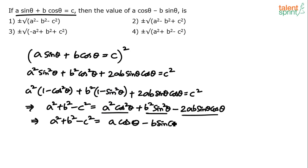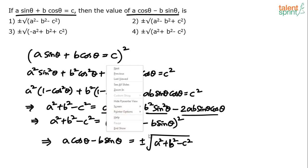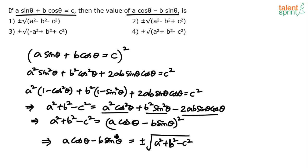So we can conclude: a²+ b² - c² = (a·cosθ - b·sinθ)². Taking square root on both sides: a·cosθ - b·sinθ = ±√(a² + b² - c²). That's option 4, and that's your answer. Easy one, right?